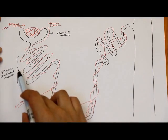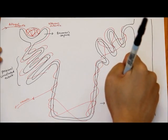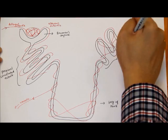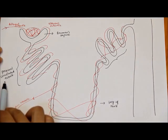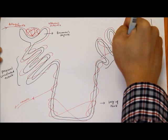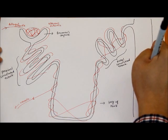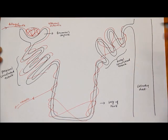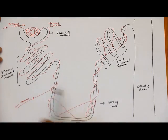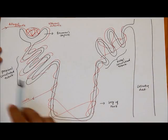After the proximal convoluted tubule, the filtrate loops into the loop of Henle. It then moves upward to the distal convoluted tubule, which looks very similar to the proximal convoluted tubule. Finally, it leads to the collecting duct, where the urine will be collected and sent to the renal pelvis. These are the main structures of a nephron.